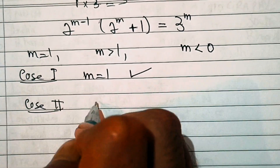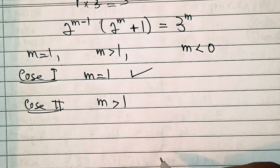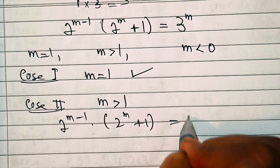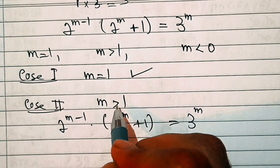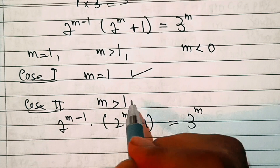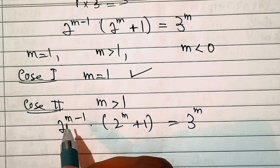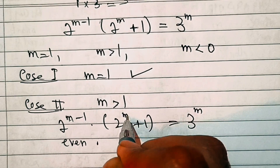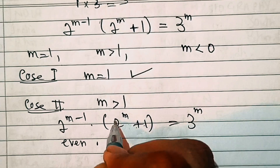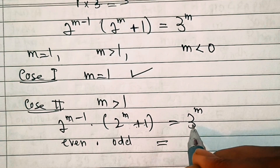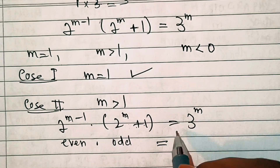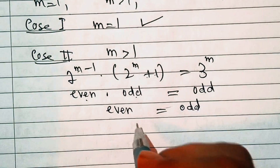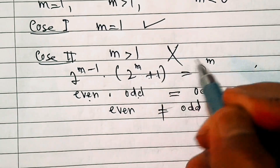For Case 2, if m > 1, consider 2^(m-1) · (2^m + 1) = 3^m. For any integer m ≥ 2, the factor 2^(m-1) is always even. The factor (2^m + 1) is odd, since 2^m is even and adding 1 makes it odd. So the left side is even × odd = even. But 3^m is always odd. Even can never equal odd, so this case is impossible and is rejected.